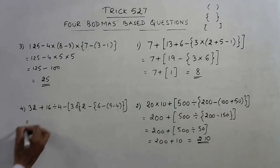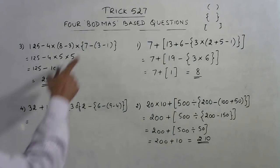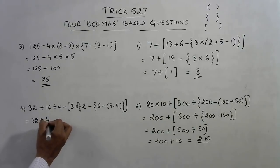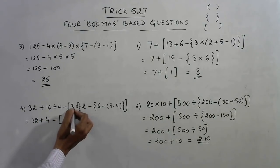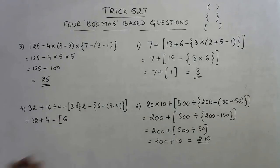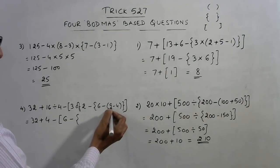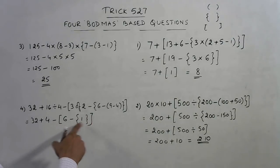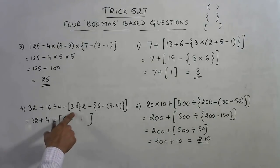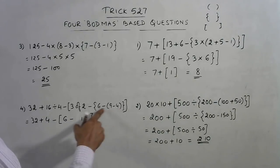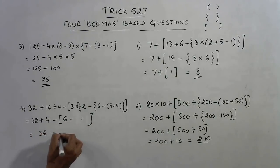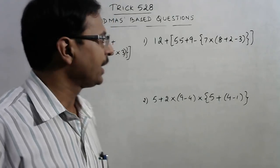The next question has an 'of'. We have plus, divided, and minus — divide comes first, so I divide and open the bracket simultaneously: 32 plus 16 divided by 4 is 4, minus 3 of 2 — which means 3 times 2 is 6 — minus the curly bracket 9 minus 4 is 5. So 6 minus 5 is 1. Then 32 plus 4 is 36, minus 6 is 30, minus 1 gives the answer 25... the final answer for this question is 30.